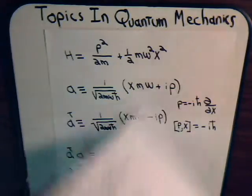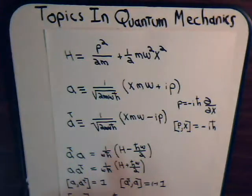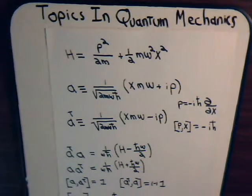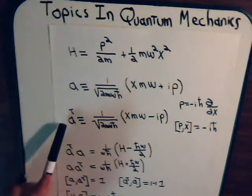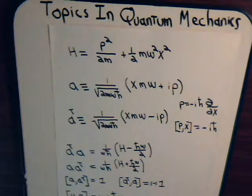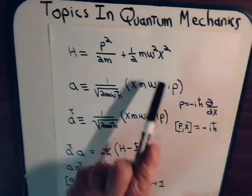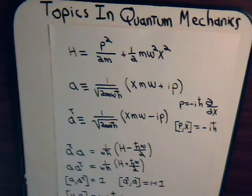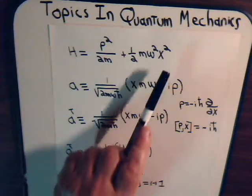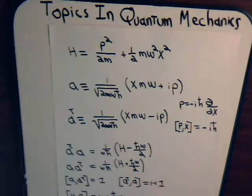In the previous two videos, we were working with the new operators that we defined, A and A-dagger. Also, I think it was in video number 23, we determined that the Hamiltonian of the one-dimensional harmonic oscillator takes on this expression.